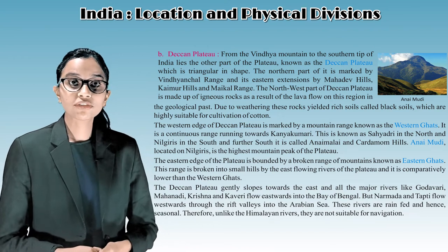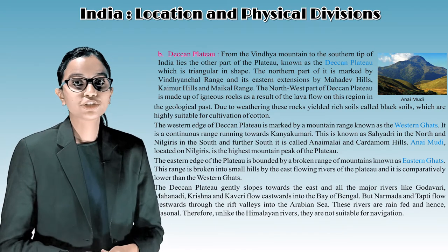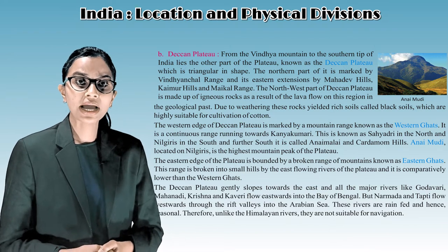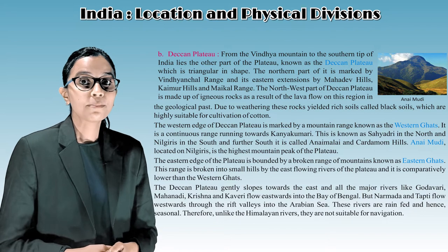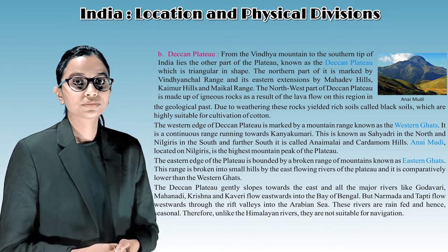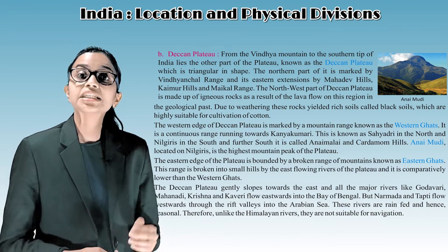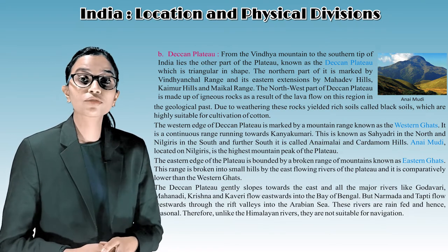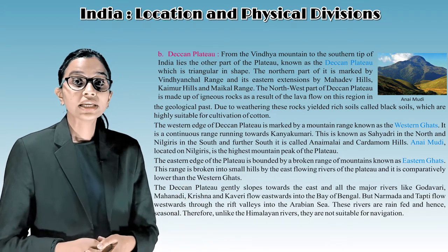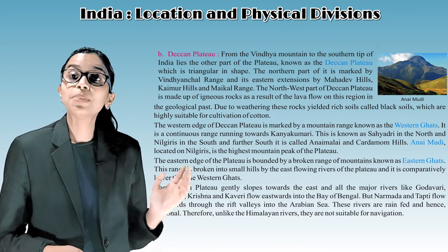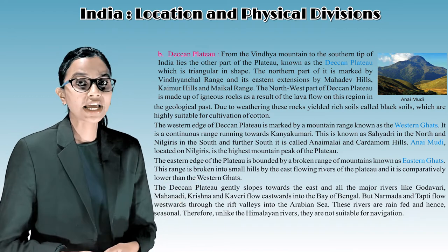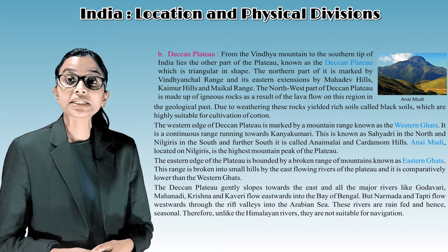From the Vindhya mountains to the southern tip of India lies the Deccan Plateau, which is triangular in shape. Its northern part is marked by the Vindhyachal range, its eastern extension by the Mahadev Hills, Kaimur Hills, and Maikal range. The northwestern part of the Deccan Plateau is made up of igneous rocks resulting from lava flows in the geological past. Due to weathering, these rocks yield rich black soils, highly suitable for cultivation of cotton.